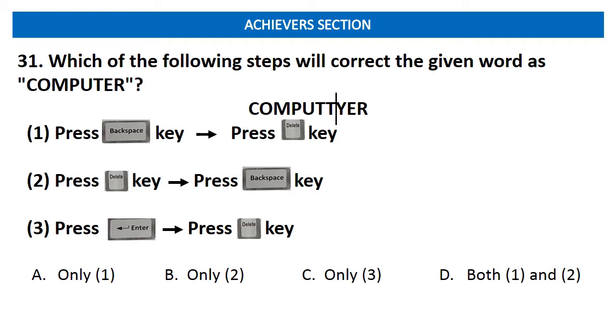Achievers section, question number 31. Which of the following steps will correct the given word as computer? Please look at the word carefully. Here the correct answer is option D. Because step 1, pressing backspace key will erase the letter T, that is before the cursor and it will display like C-O-M-P-U-T-Y-E-R. Then in step 2, pressing delete key will erase the letter Y, that is just after the cursor and then the word will display like computer. So the answer is option D.